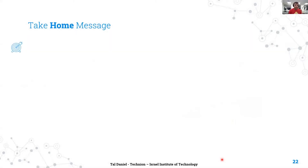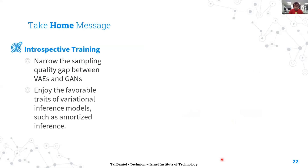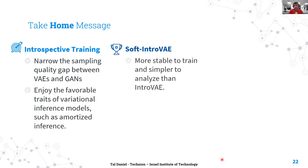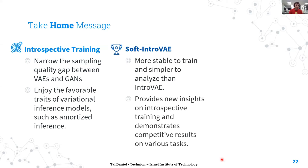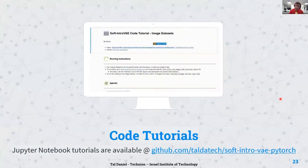To sum up, introspective training narrows the sampling quality gap between VAEs and GANs, and it enjoys the favorable traits of variational inference models, such as amortized inference. Our model, Soft Intro VAE, is more stable to train and simpler to analyze than Intro VAE. It provides new insights on introspective training and demonstrates competitive results on various tasks. Looking ahead, introspective models open the door for using high-quality generative models in applications that also require high-quality inference. We have pre-trained models and step-by-step Jupyter Notebook tutorials on our GitHub.